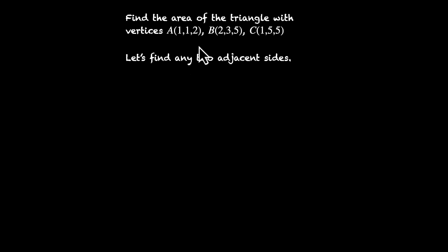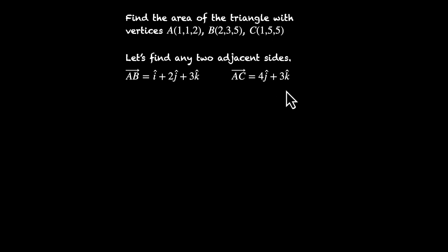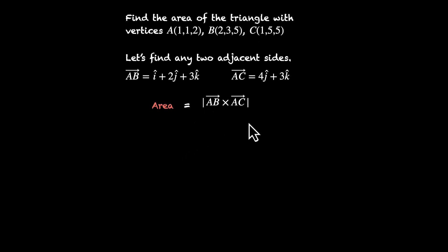Let's find vectors along these two sides. Vector AB, the vector from A to B, is (2−1, 3−1, 5−2) = î + 2ĵ + 3k̂. Let's also find vector AC, which is C minus A: (1−1, 5−1, 5−2) = 0î + 4ĵ + 3k̂. Now we have AB and AC. To get the area, we'll take the cross product, and because this is a triangle we'll divide by two. So area equals the magnitude of AB cross AC, divided by two.